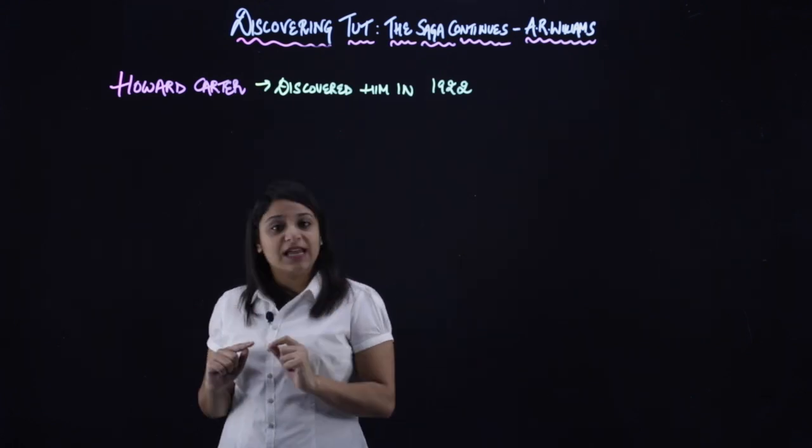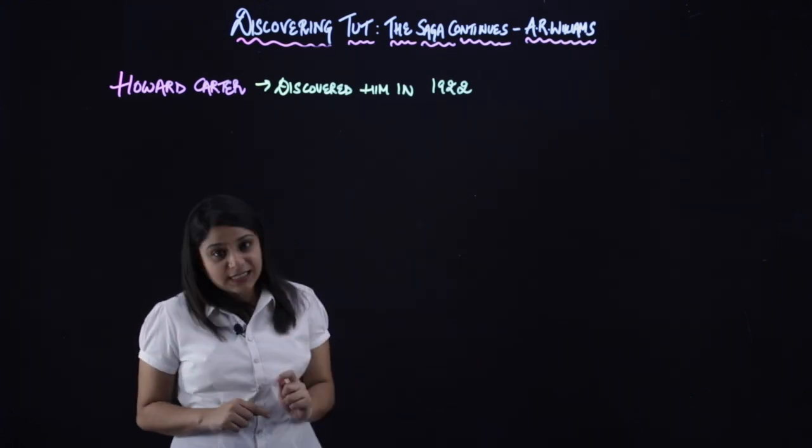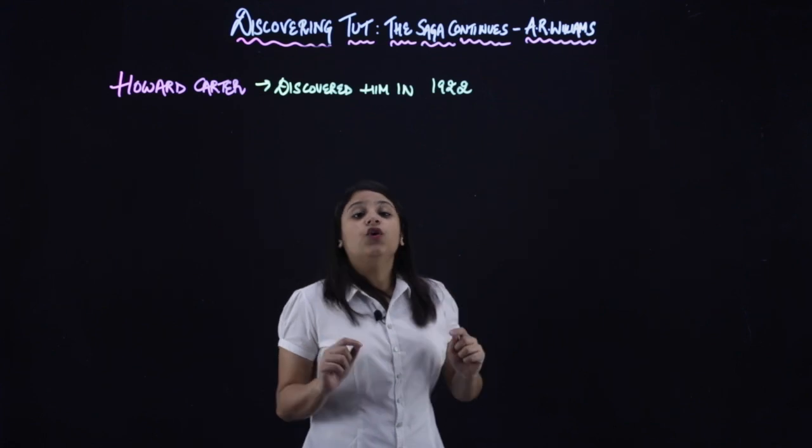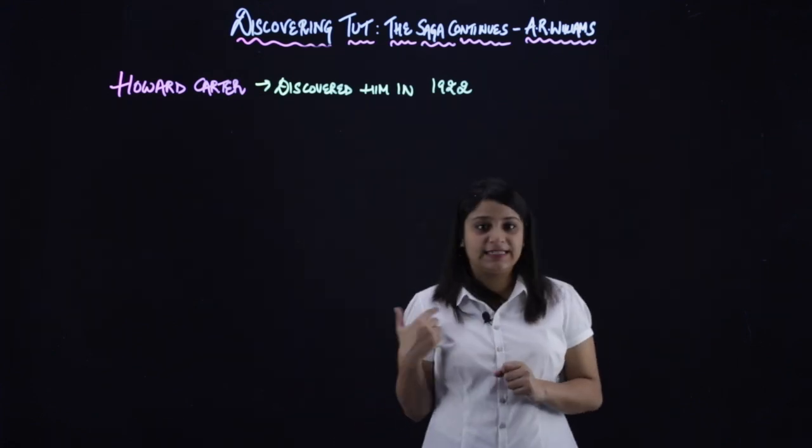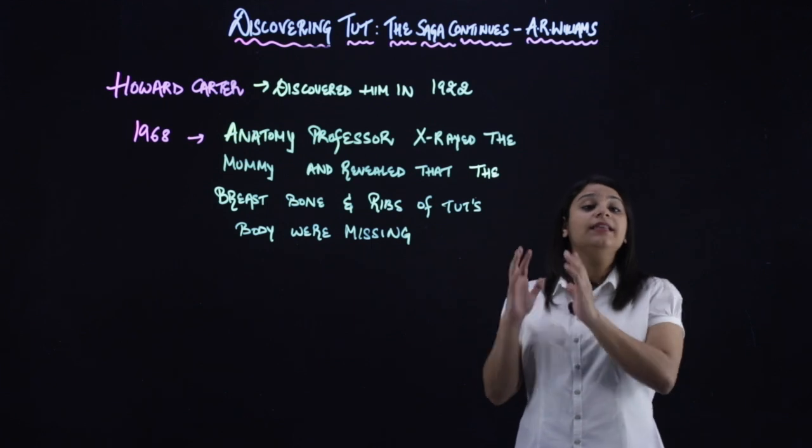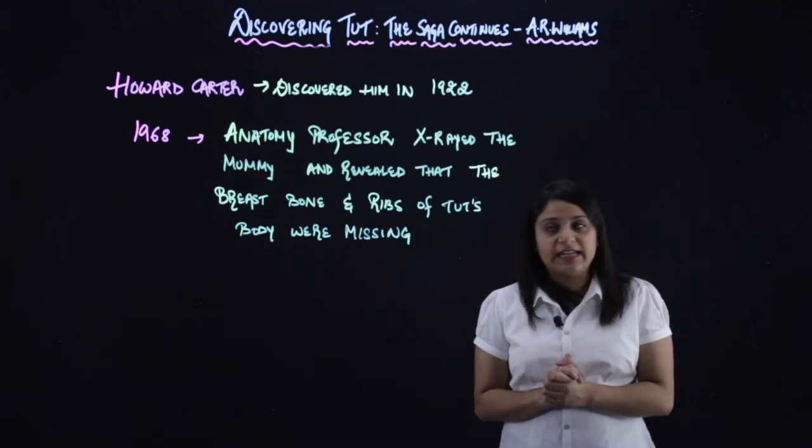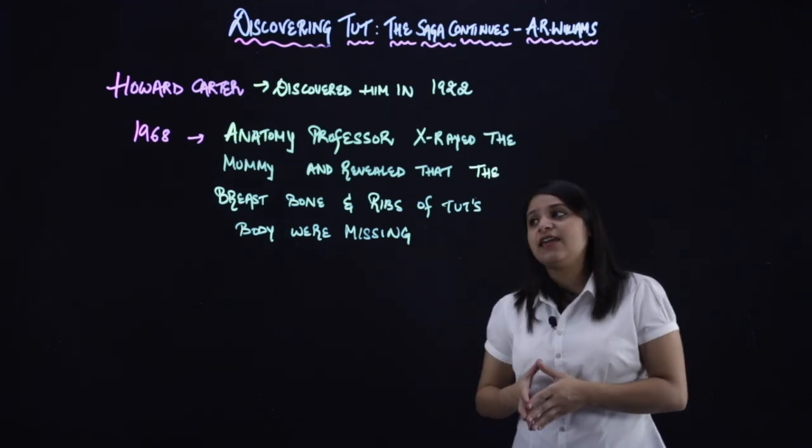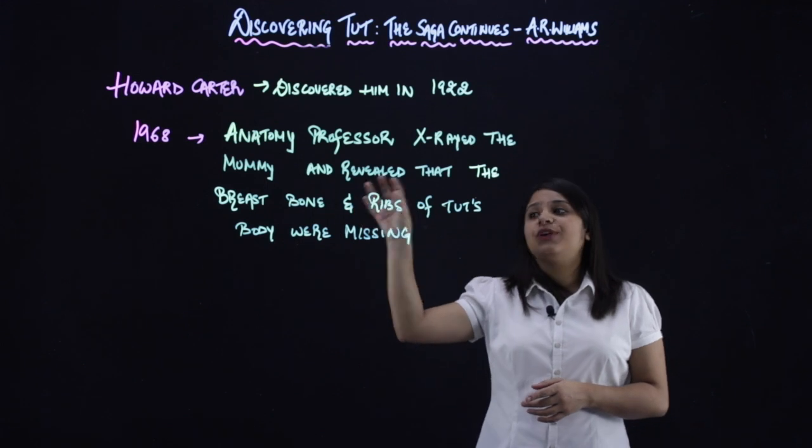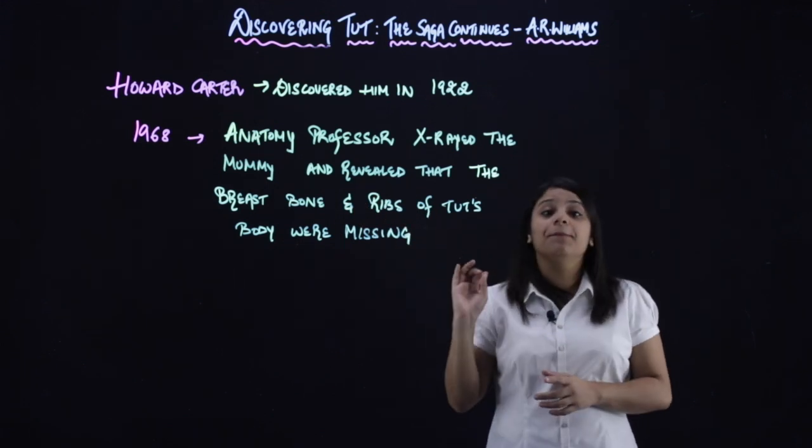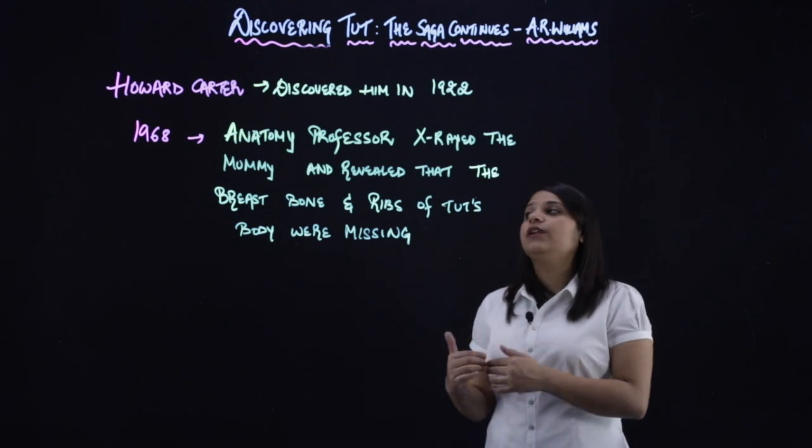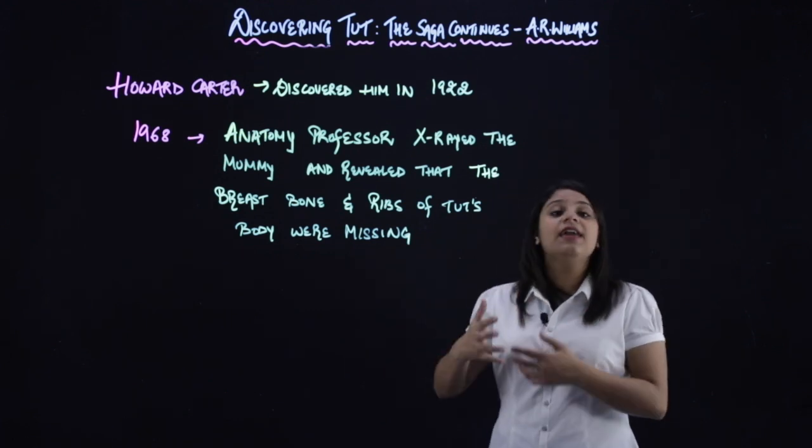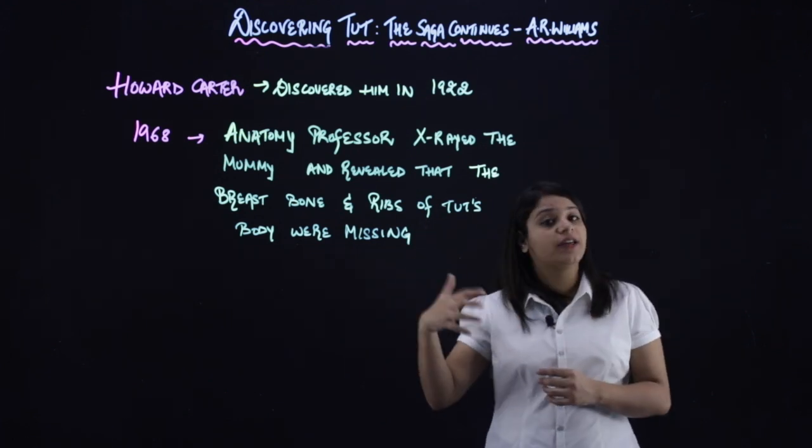So when in 1968 an anatomy professor studied it, she noticed a very strange thing. Now what was it? Let's see. So what this anatomy professor studied, when she did an x-ray, his breast bone and ribs were missing. So this was the revelation that he did when in 1968 he x-rayed King Tut's body.